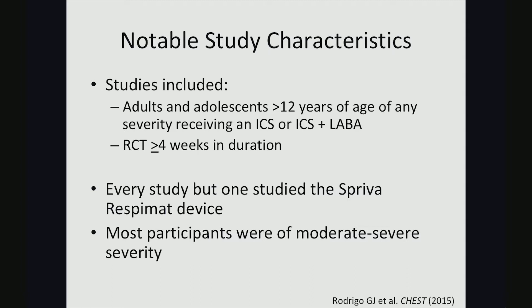Looking at notable study characteristics: to be included, studies had to involve adults and adolescents greater than 12 years of age of any severity receiving at least an inhaled corticosteroid or an inhaled corticosteroid plus a long-acting beta agonist. Any randomized controlled trial had to be at least four weeks in duration. Every study but one used the Spiriva Respimat device; the one that did not used the Spiriva HandiHaler. Most participants were of moderate to severe severity.